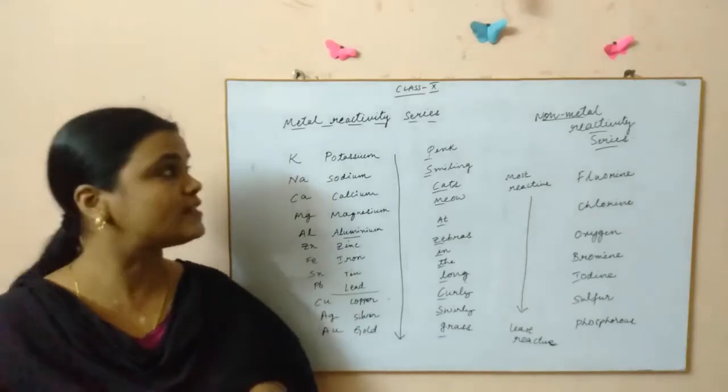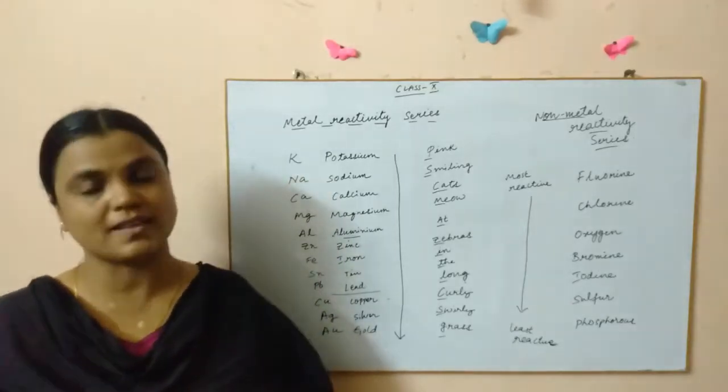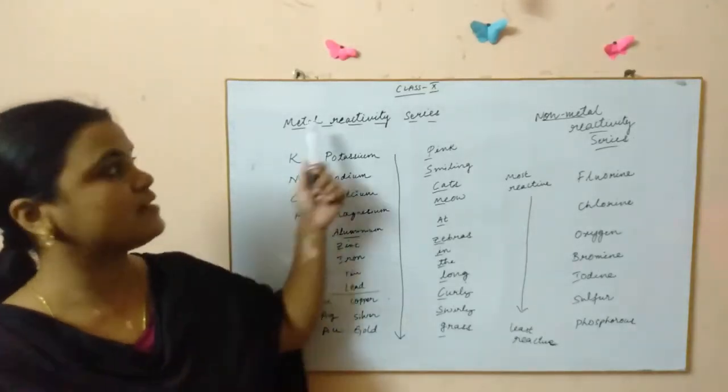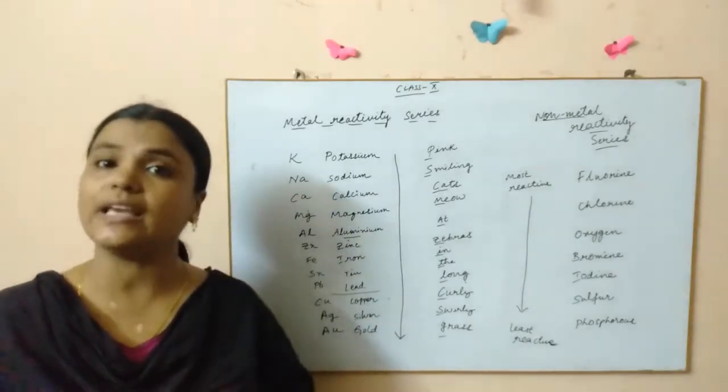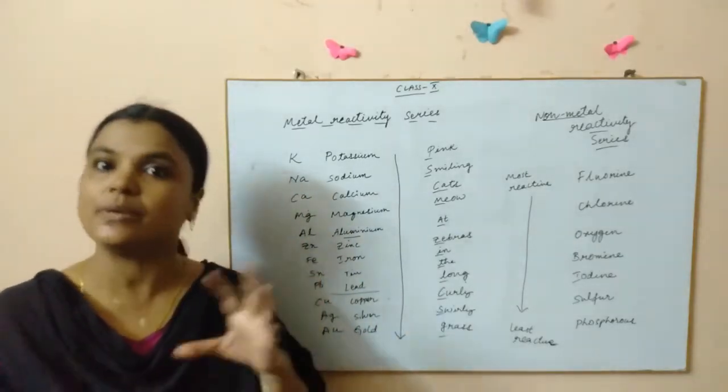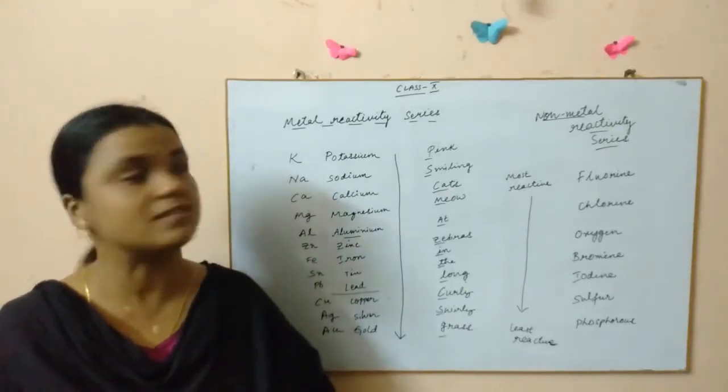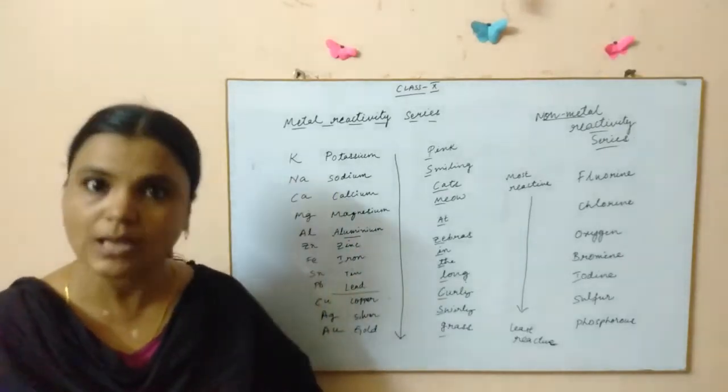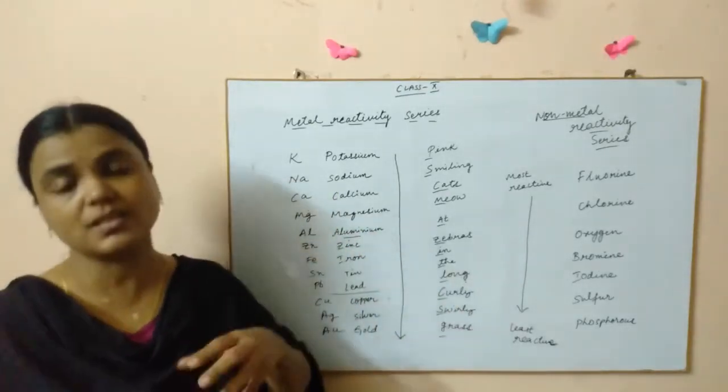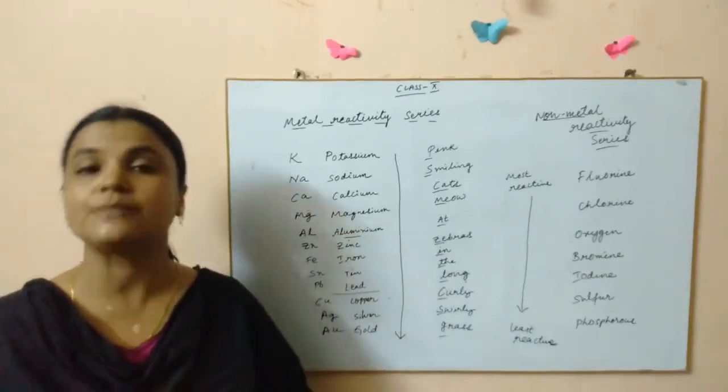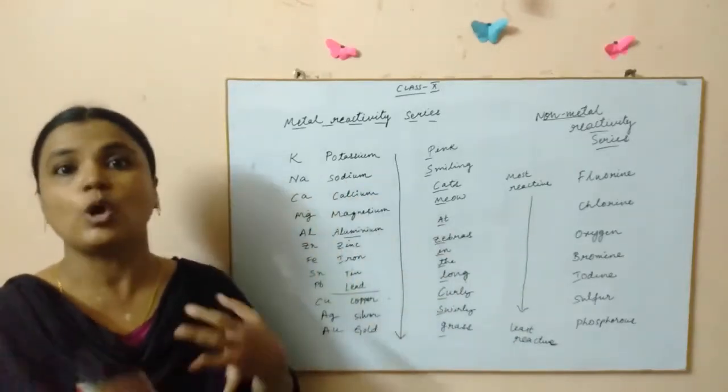In my previous video we saw about the amphoteric oxides. So now it is the turn of metal reactivity series. I already talked about this in the chemical reactions of metals and nonmetals, but once again let's have a look at how you can remember this series.